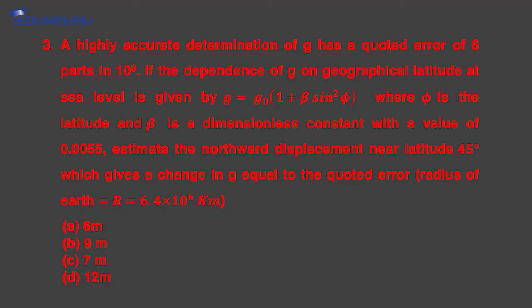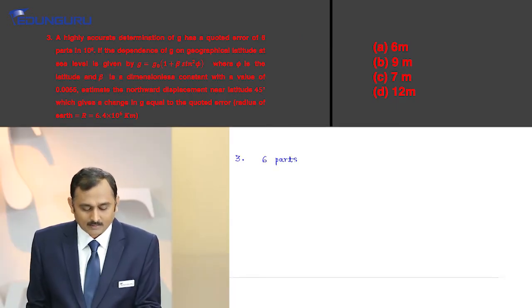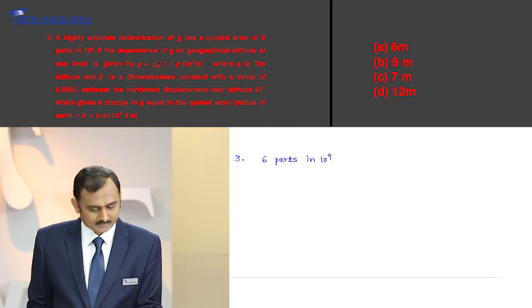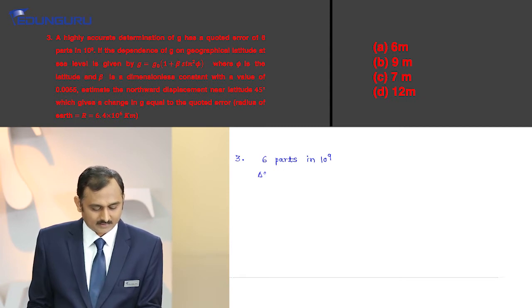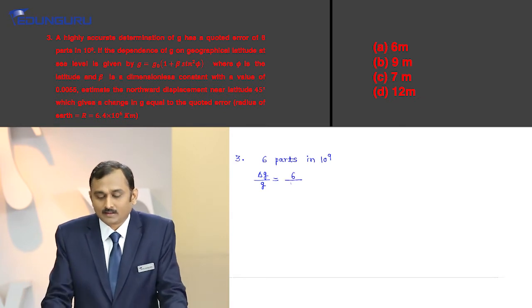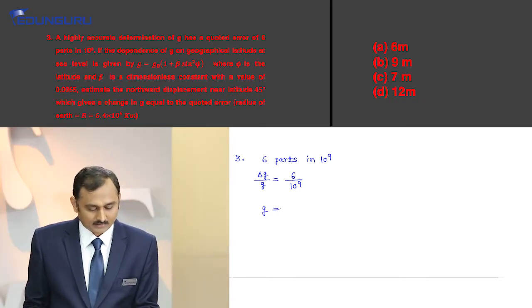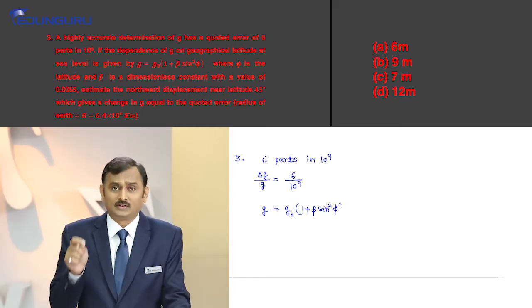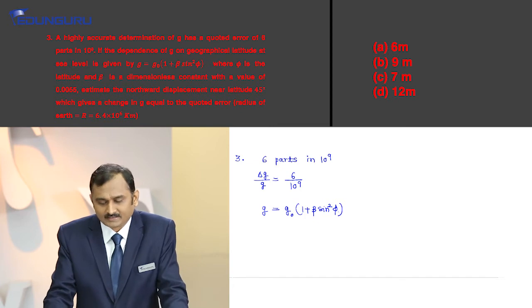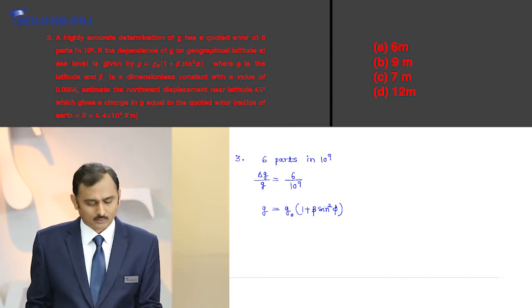Let us take up the third question. A highly accurate determination of G (acceleration due to gravity) has a quoted error of 6 parts in 10⁹, so δG/G = 6/10⁹. The dependence of G on geographical latitude at sea level is given by G = G₀(1 + β sin²φ), where φ is the latitude and β is a dimensionless constant with a value of 0.0055.